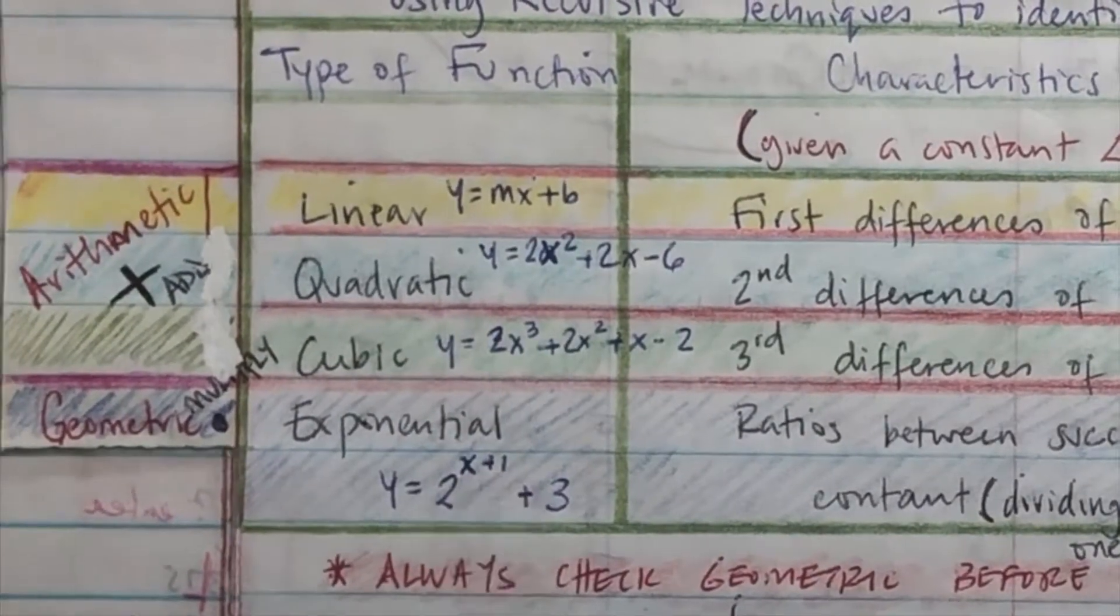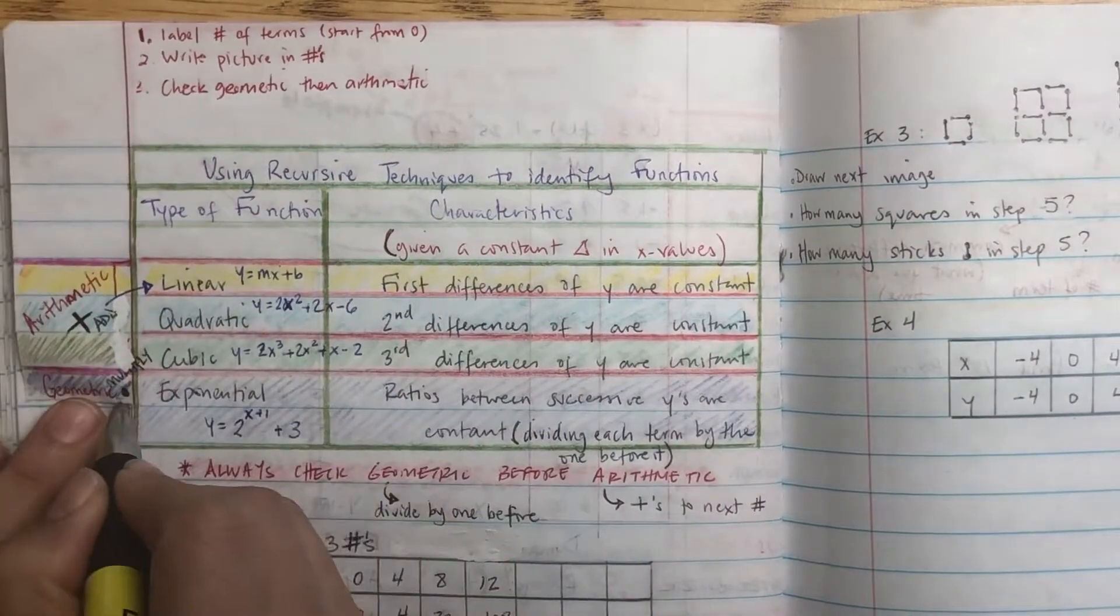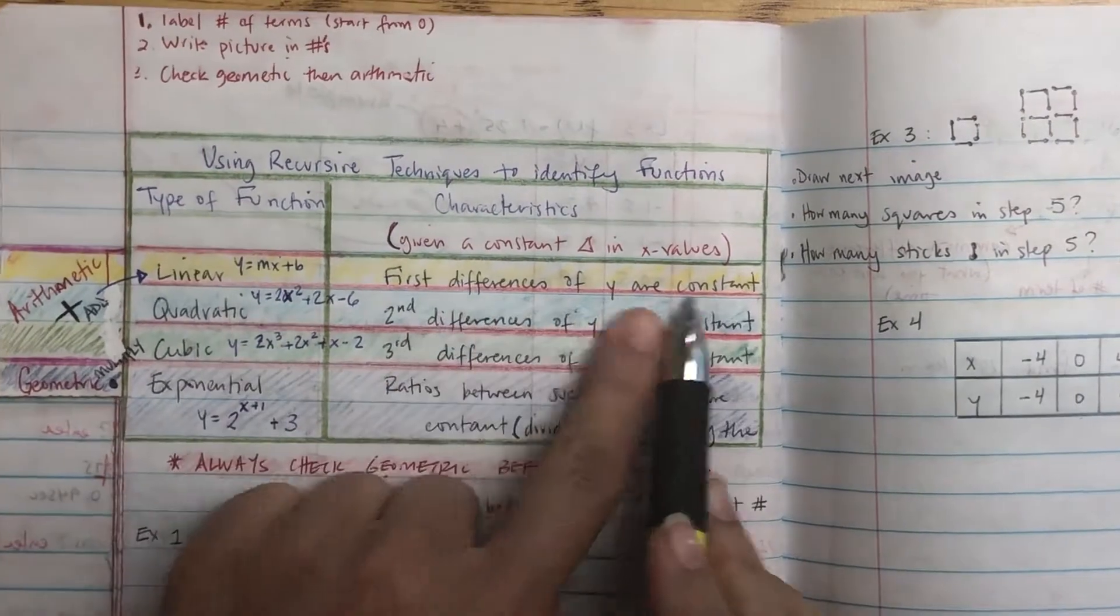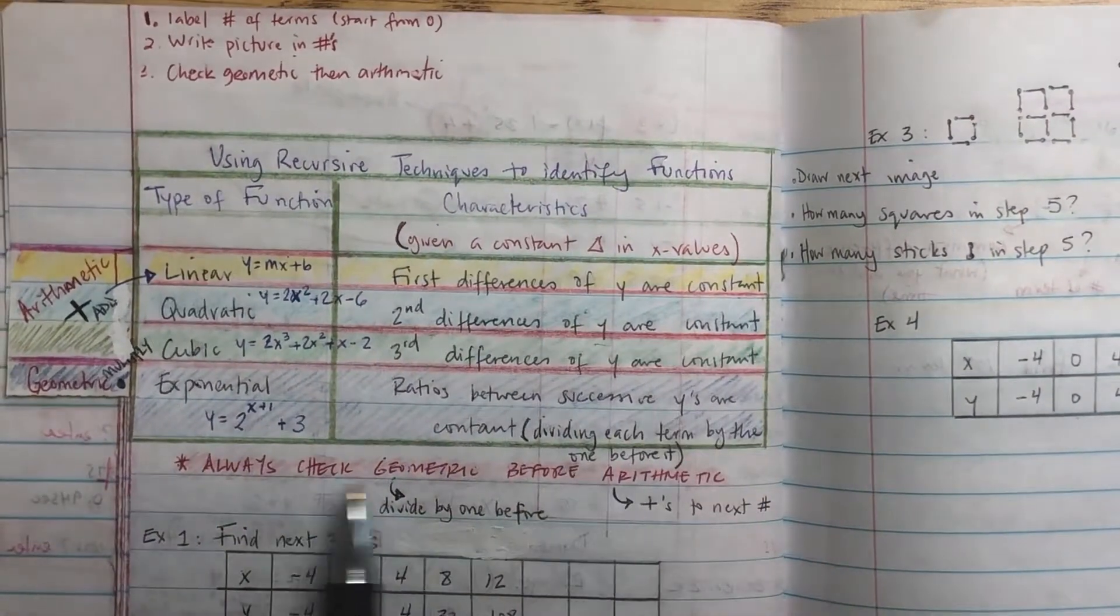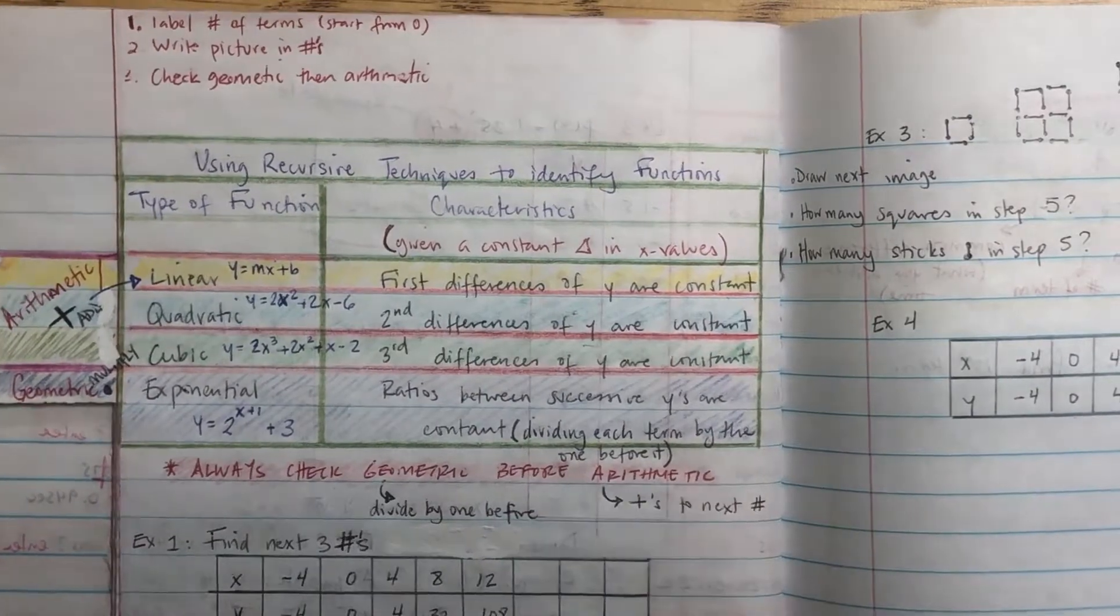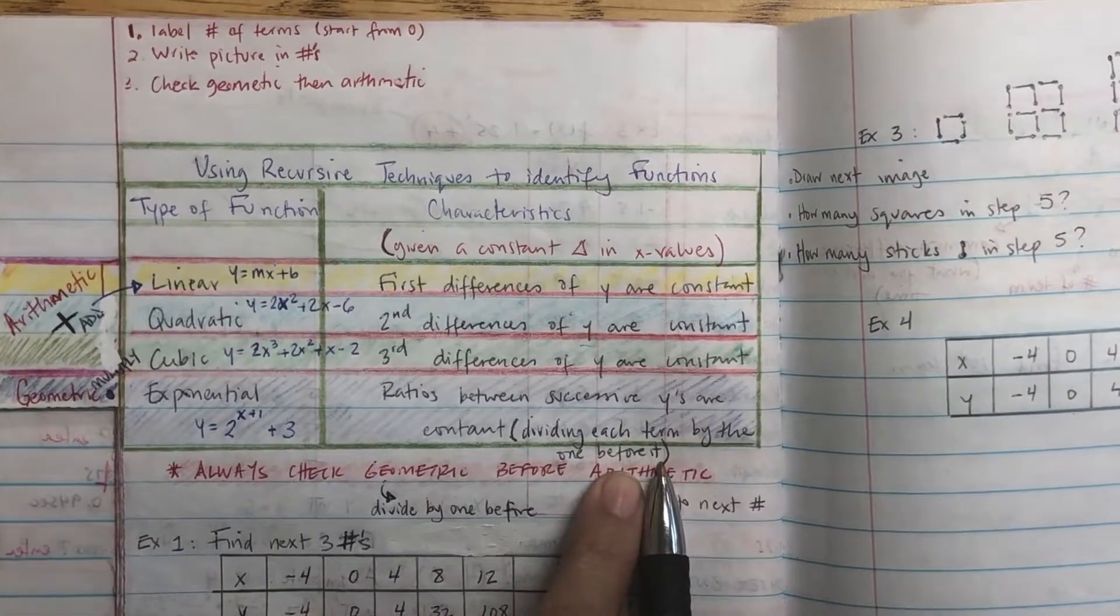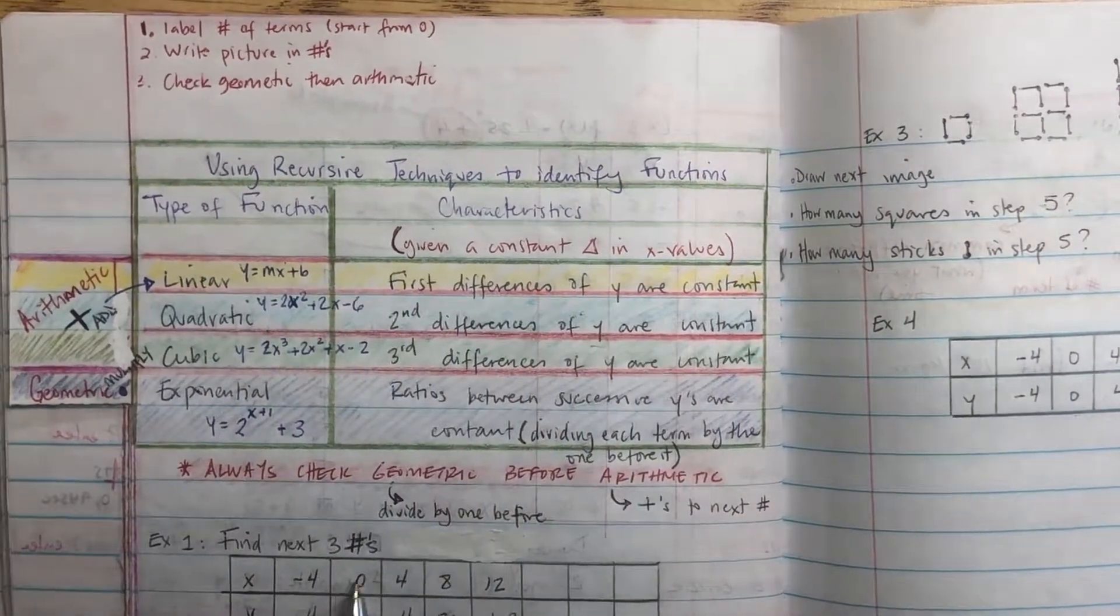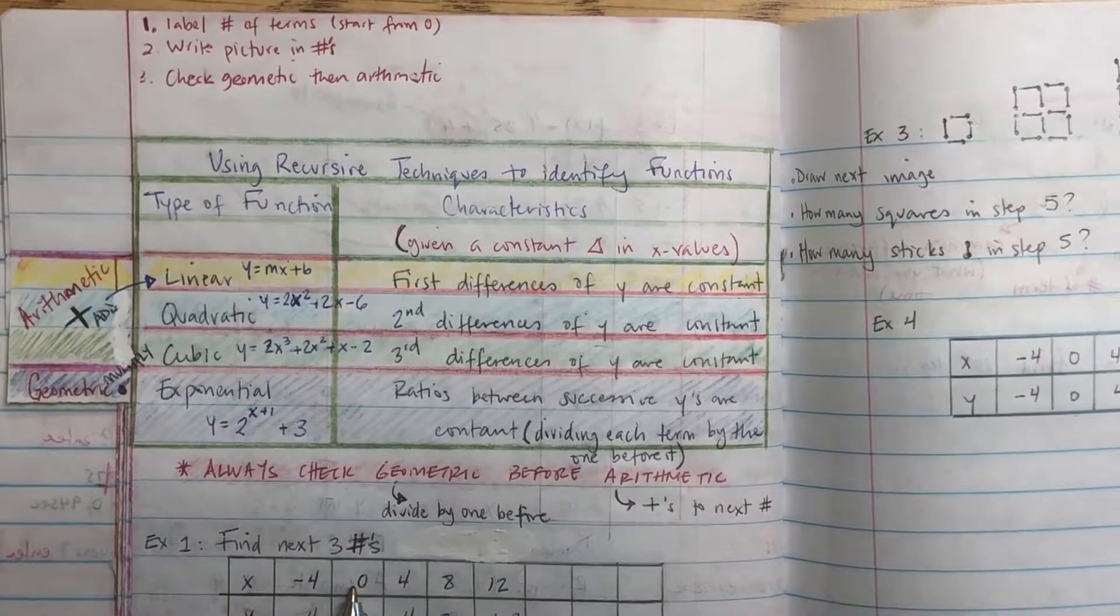Alright, so when you're looking at these functions, linear is going to be arithmetic, but we're going to actually deal with that in the next video. Geometric is going to be exponential. And all you have to do is check for certain things. If you're looking for linear, you check first differences, quadratic second differences, cubic third differences, and exponential ratio. And you want to always check geometric before you check arithmetic. But this only works when there's a constant change in the x values as well.